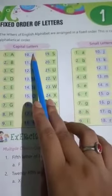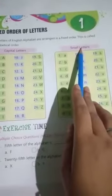In English alphabet, there are two types. Number 1, capital letters. Number 2, small letters.